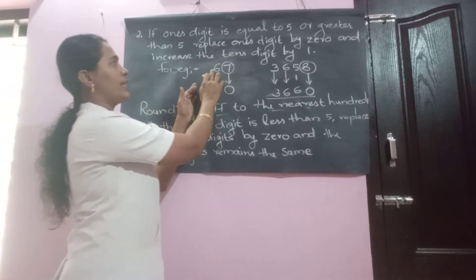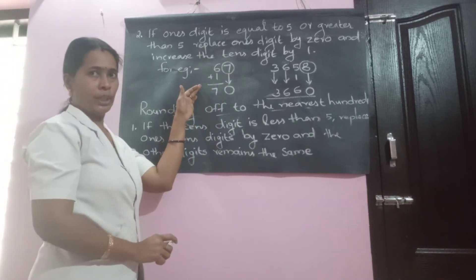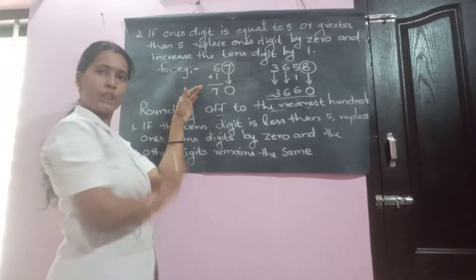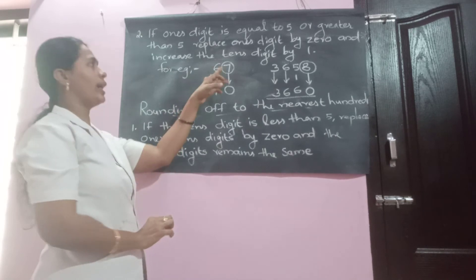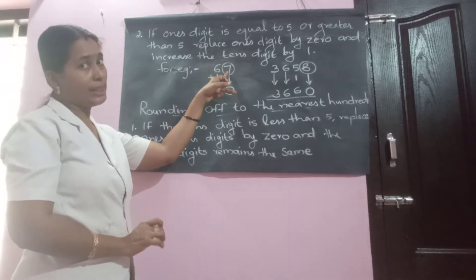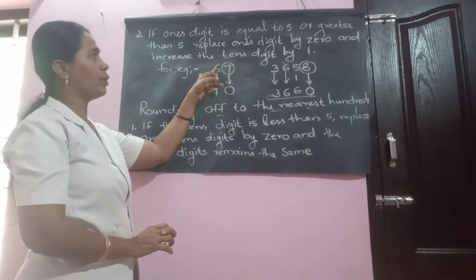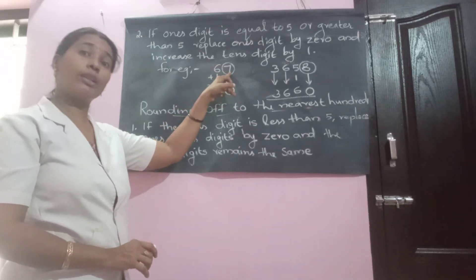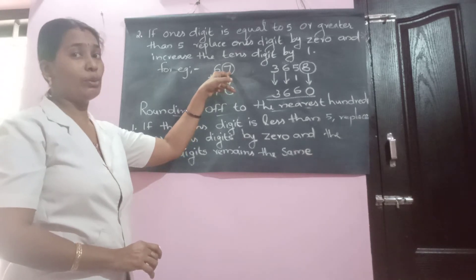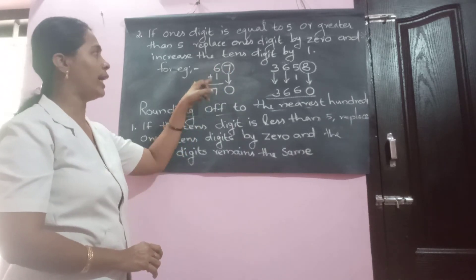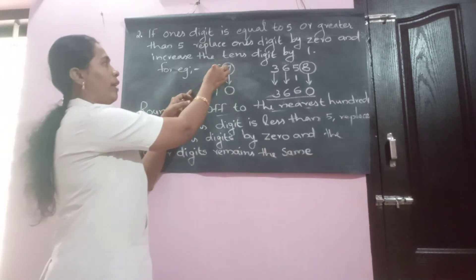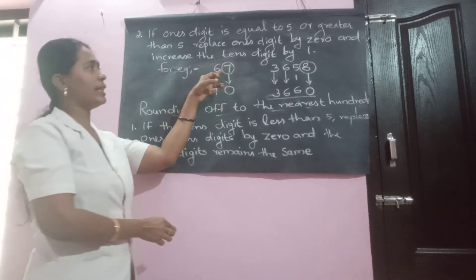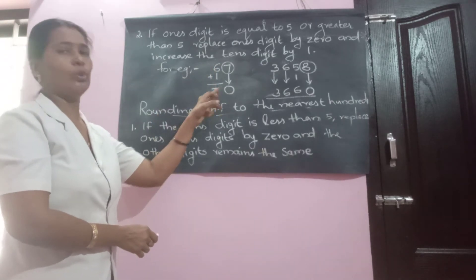For example, take the number 67. Circle the one's digit and replace it by zero. Now look at this number — is it less than five? No. Seven is more than five, so what we have to do? Add one to the ten's digit. That is, add one to six. Six plus one becomes seven. So 67 is rounded up to 70.